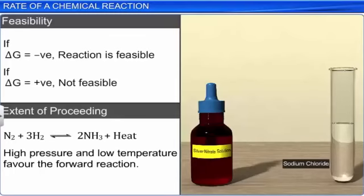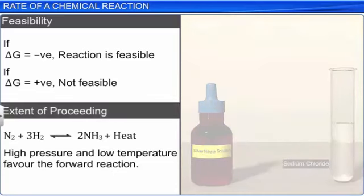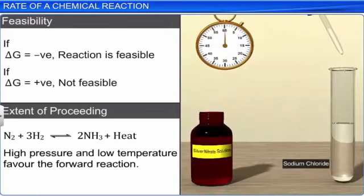One of the most important aspects of the study of chemical reactions, other than predicting their feasibility and the extent to which they would proceed, is the time taken for their completion, i.e., the rate of a chemical reaction.